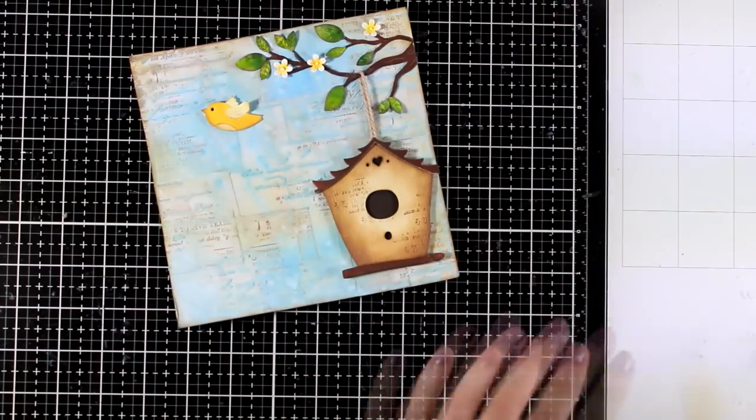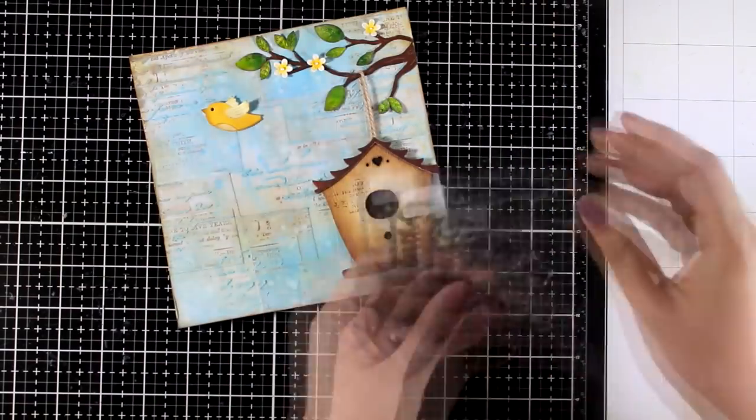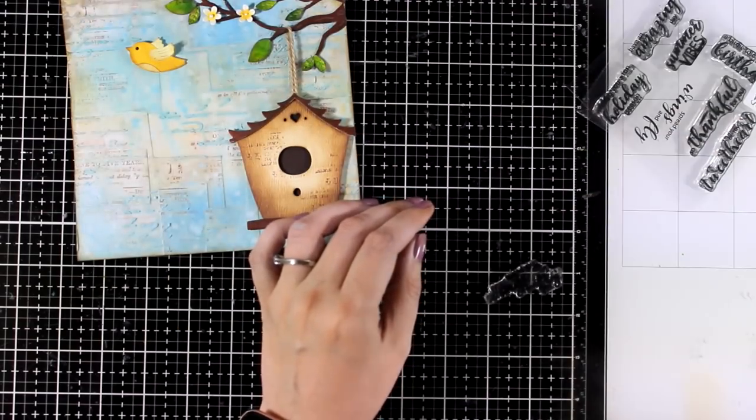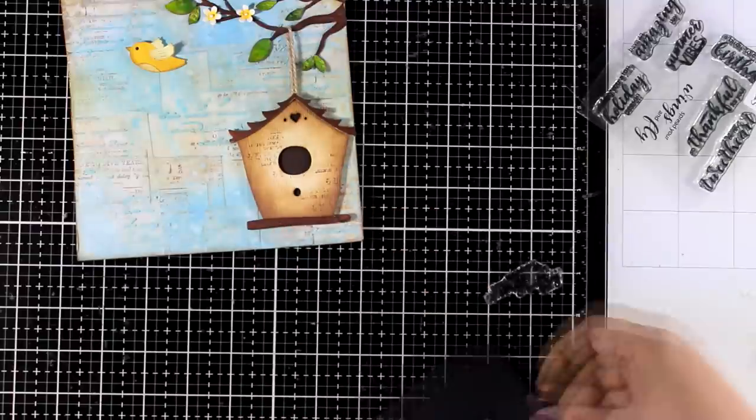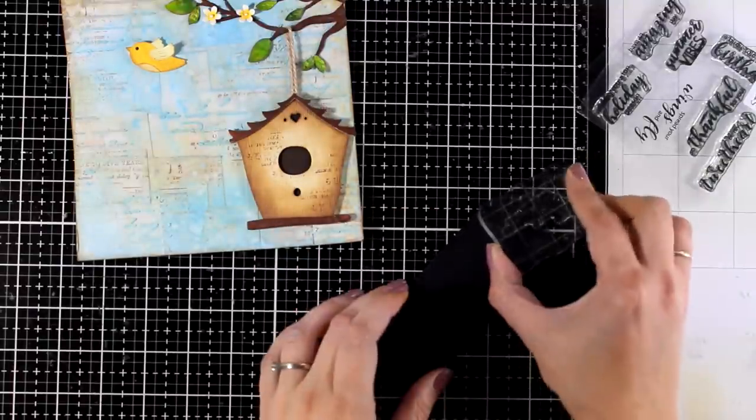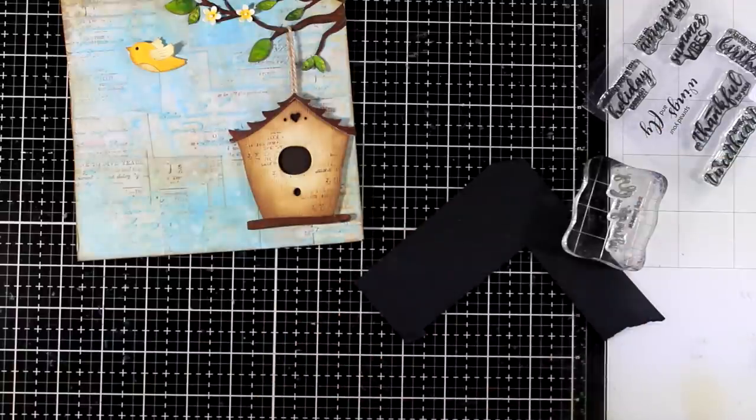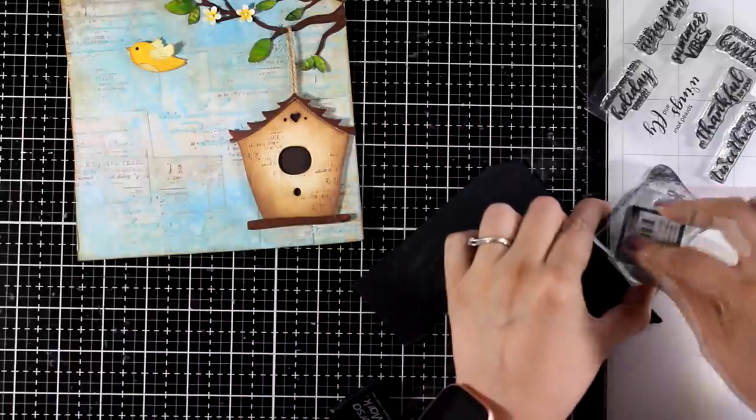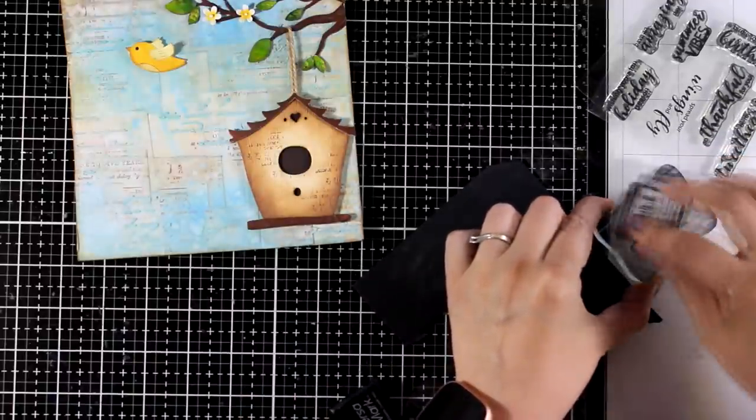For my quote I'm going to use one of the sentiments from my sentiment clear stamp set, and this is called Tweet Sentiments. If this is a card design you can just stamp it on your background and you are good to go. If this is a smaller ATC card or maybe an art journal like 6x6, you can also stamp it directly. Since I need to cover up more real estate here—this is going to end up on an 8x8 frame—I am going to combine the actual quote with bigger dies.